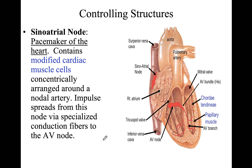The heart's contraction is autonomous — not controlled by the nervous system but from within the heart itself. We have the SA node and the AV node and the bundle of His. The SA node is found in the wall of the right atrium near the entrance of the cranial vena cava. The AV node is found at the level of the interatrial septum, then spreads through the bundle of His.